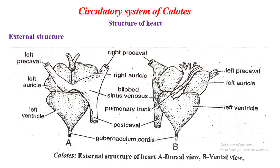Externally, both auricles are separated from the ventricle by the auriculoventricular groove, also called the AV groove. There are two diagrams — diagram A showing the dorsal view and diagram B showing the ventral view of the Calotes heart. In either view, the right auricle appears larger than the left auricle.